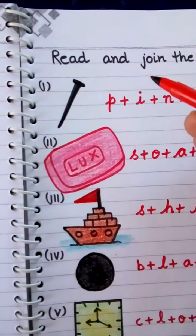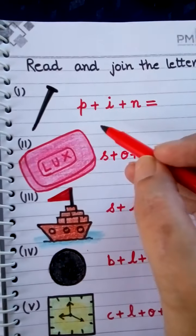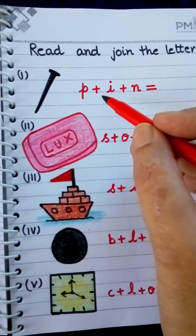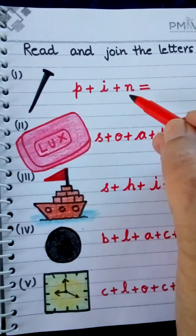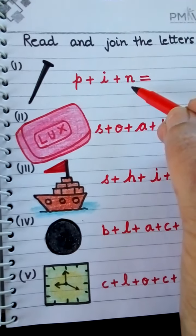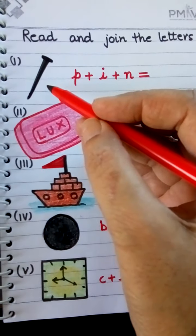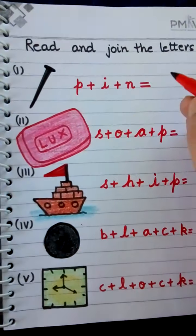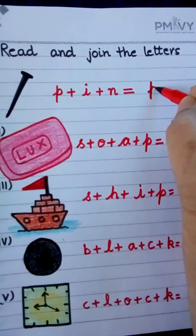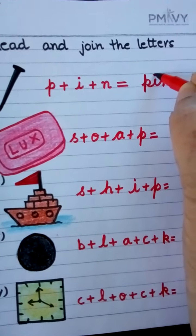Now we will read and join the letters. This is P-I-N. Pin. This is the picture of Pin. We will write P-I-N. Pin.